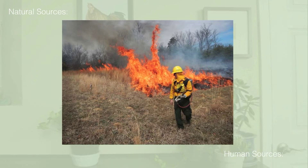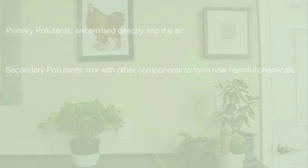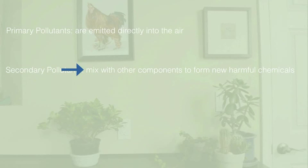Most of the pollutants are generated by burning fossil fuels. There are two types of air pollutants: primary and secondary pollutants. The primary pollutant is emitted directly into the air, while secondary pollutants mix with other air components to form new harmful chemicals.